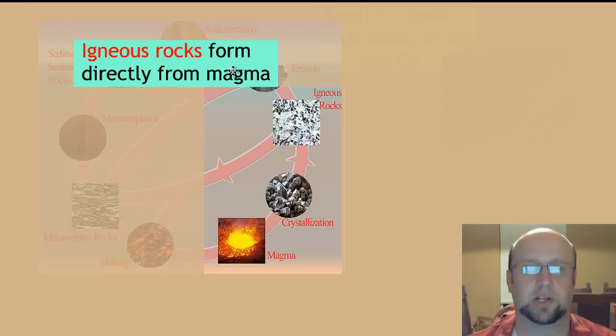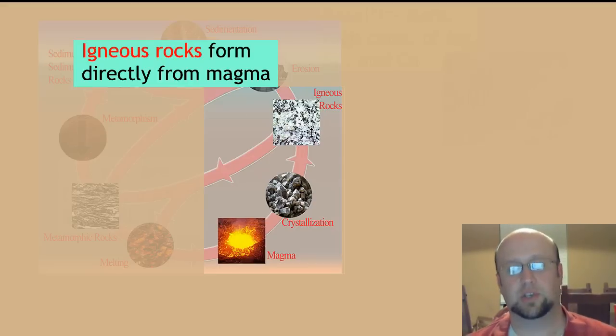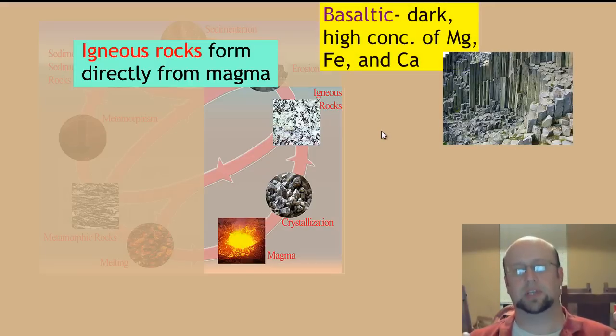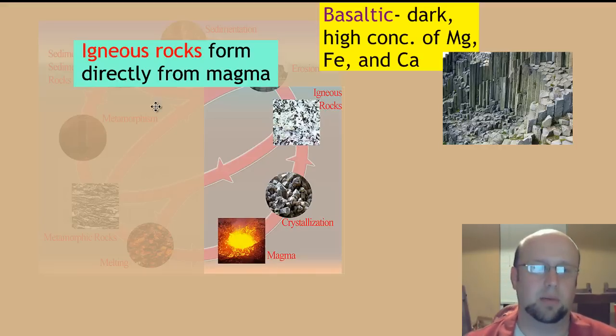The first type are igneous rocks. These are the ones directly formed as magma cools. The magma crystallizes to form igneous rocks. It forms two basic types: intrusive and extrusive, underground and above ground. Then it forms basaltic rocks and granitic rocks. Basaltic rocks are very dark. Basalt is a specific kind of volcanic rock. It's really dark with a lot of magnesium, iron, and calcium that give it that color.